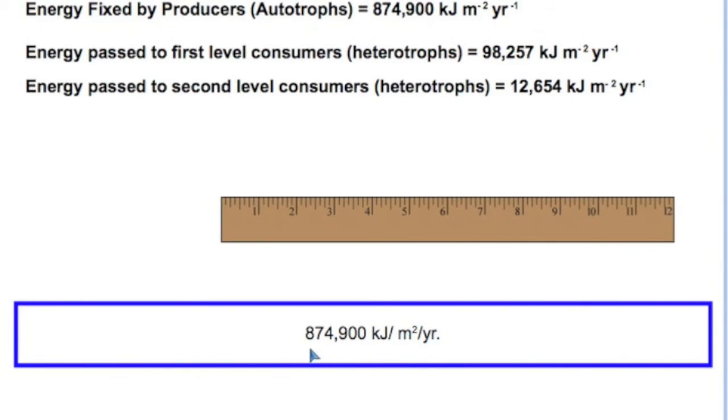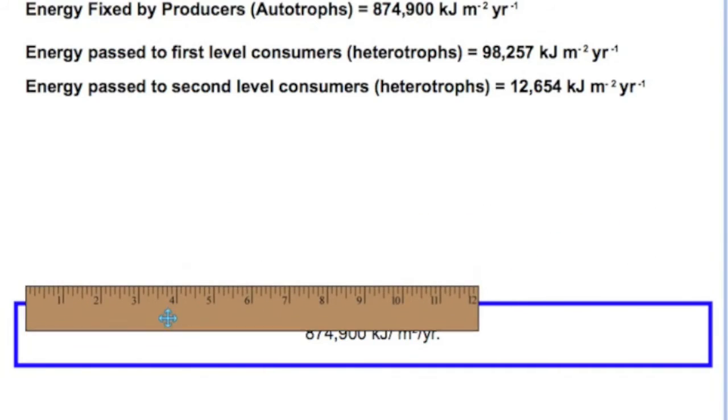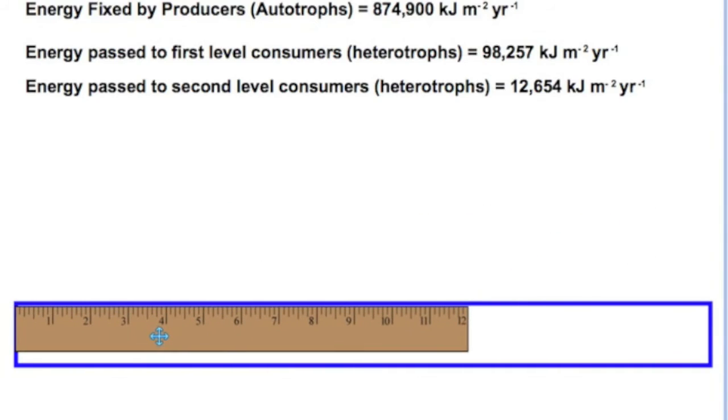Take here, for example, that this first level of energy fixation by autotrophic organisms or green plants is 874,900 kilojoules per square meter per year.